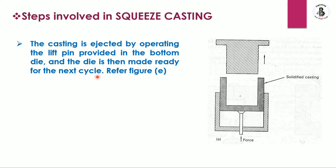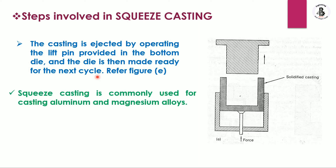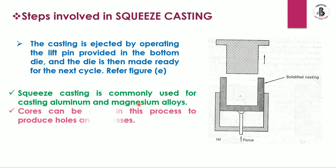This is the simple technique for making squeeze casting components. Squeeze casting is commonly used for casting aluminium and magnesium alloys. Cores can also be used in this process to produce holes and recesses, if required by the shape and size of the component.